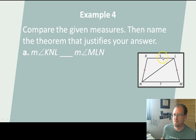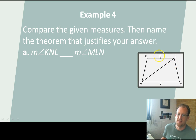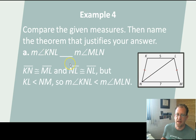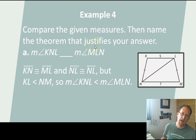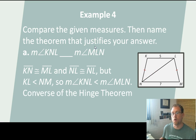They've got two sides that are the same lengths, but the angles have to be different, because the third side of the triangle is smaller here than the third side of the triangle is here. So because this side is longer, this angle has to be bigger. And because this side is smaller, this angle has to be smaller. So the measure of angle KNL has to be less than the measure of angle MLN, because this side is greater so this angle is greater, and this side is smaller so this angle is smaller. And that's the converse of the hinge theorem — going backwards through the hinge theorem.